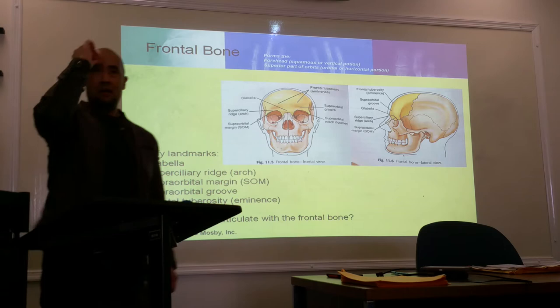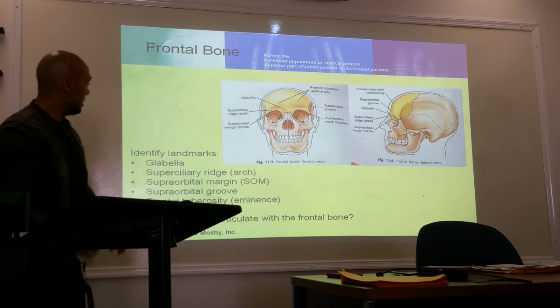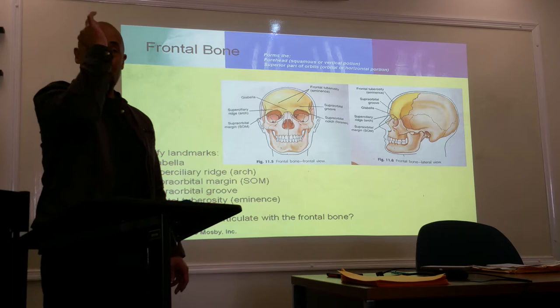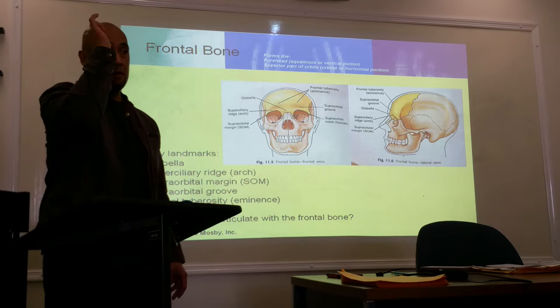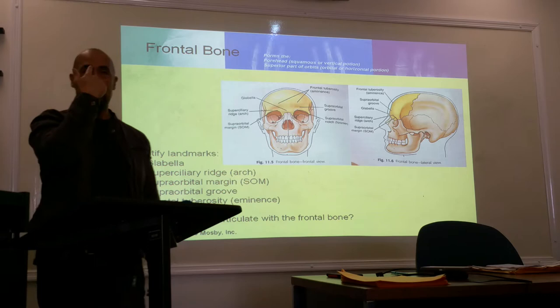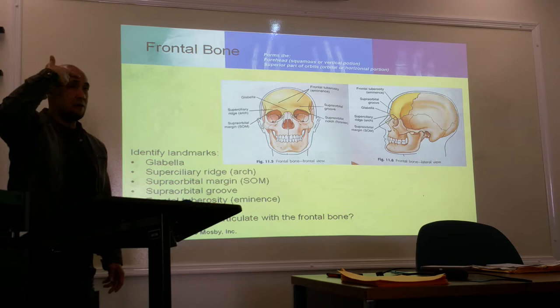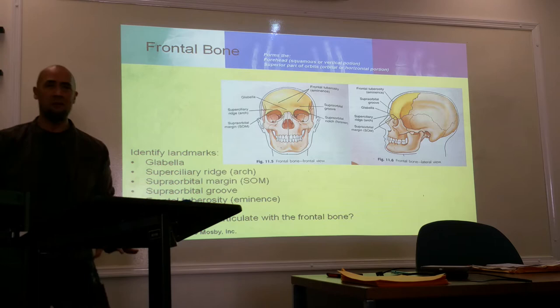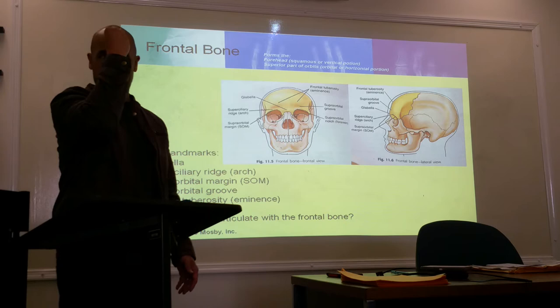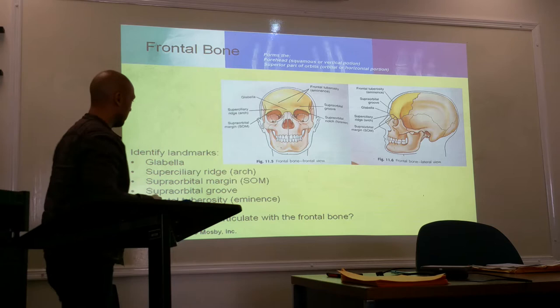These bony landmarks are important for positioning skull studies. The superciliary ridge is that little ridge above your eyebrows — you can feel that bony protrusion. Right below the eyebrows is the supraorbital margin, which is the edge of the upper part of the orbit. Above the eyebrows is the supraorbital groove — you can feel a little indentation there. The frontal tuberosity or eminence is the bump you can feel at the front of your head.